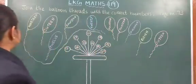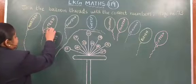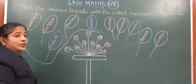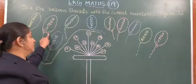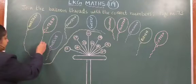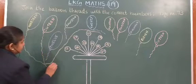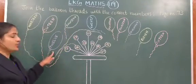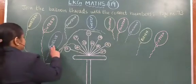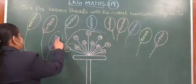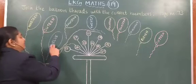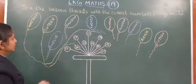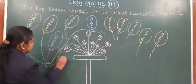Now after 19, the next number is 16 — S-I-X-T-E-E-N, 16. You have to match this number name to the numeral of 16. That thread you have to join. Join like this — 16. Now after that, next number is 12. The correct number name is T-W-E-L-V-E, 12. You have to join the balloon threads to the correct numbers.